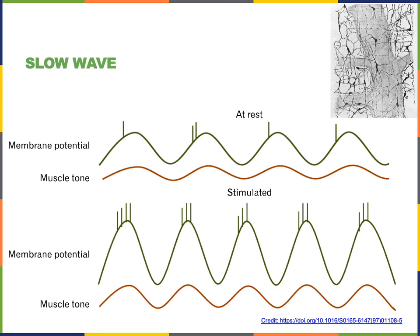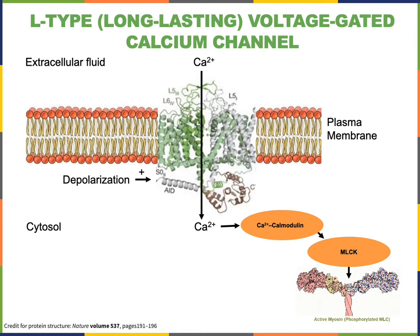As the slow wave spreads into smooth muscle, it will trigger opening of voltage-gated channels causing an action potential, and calcium will rush into the cell during the action potential to stimulate contraction. The intensity of contraction can be regulated by increasing the number of action potentials, thereby increasing the amount of calcium that enters the cell during each action potential.